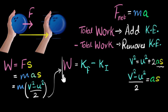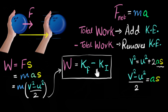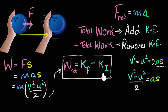This equation says the same thing we discussed: if you do positive work, final kinetic energy is greater than initial — you're adding kinetic energy. If you do negative work, you're removing kinetic energy. For example, if you do 100 joules of work, kinetic energy increases by 100 joules. If you do 100 joules of negative work, you remove 100 joules of kinetic energy. Work represents how much kinetic energy gets added or removed from a body. If there are multiple forces, calculate the total work done — that determines how much kinetic energy gets added or removed.